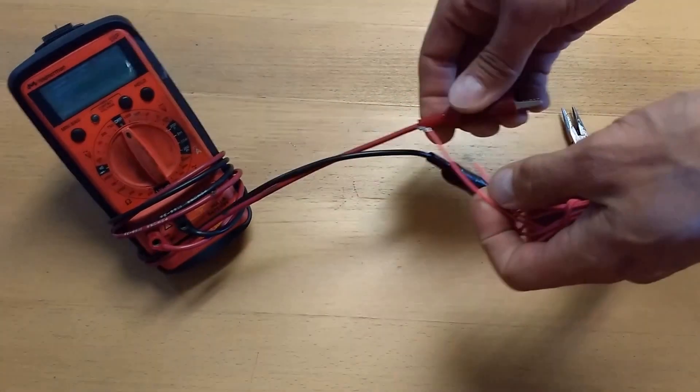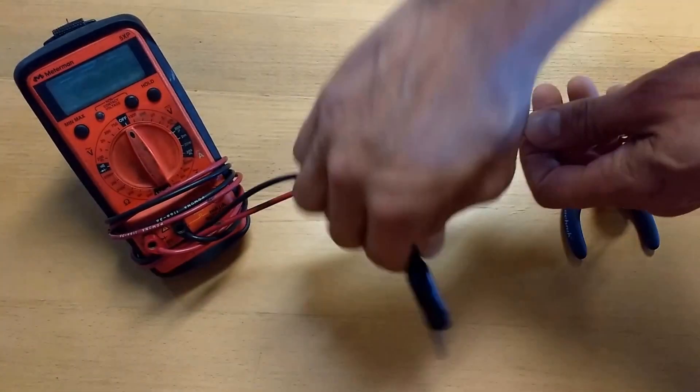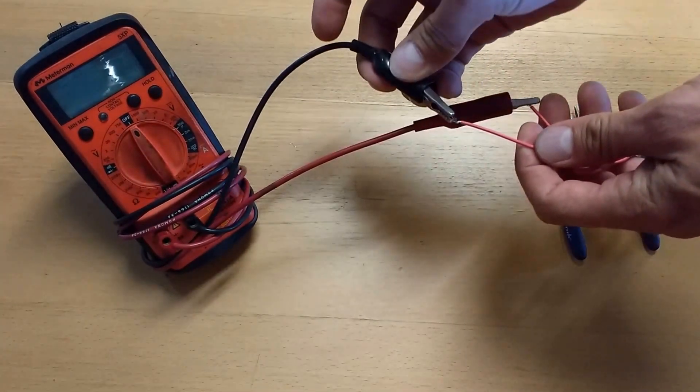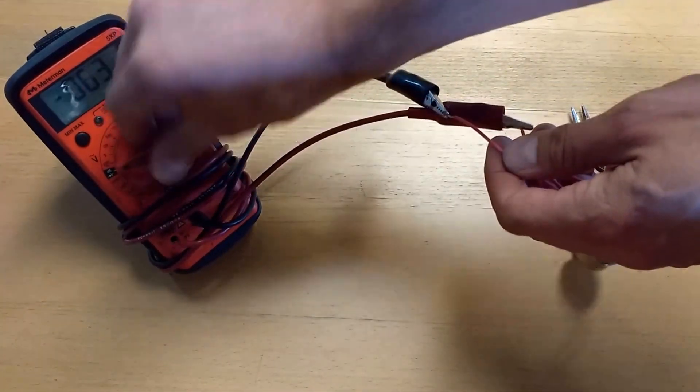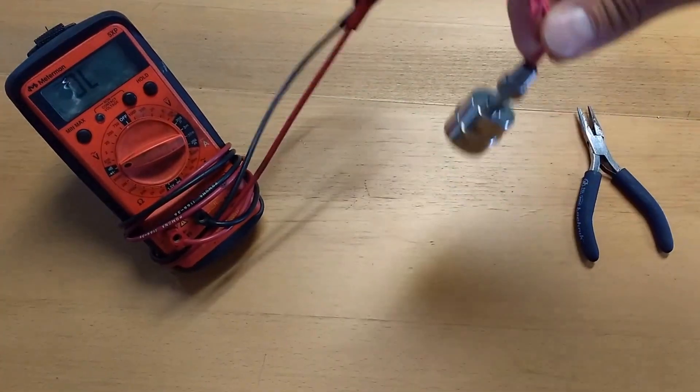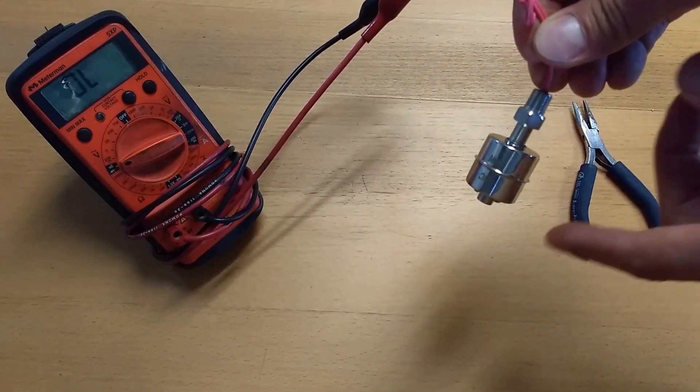First we will hook up our multimeter. Turn it on to continuity and you can see when the float is in the down position it's normally open.